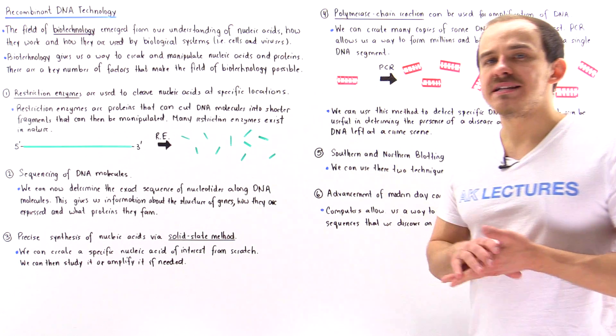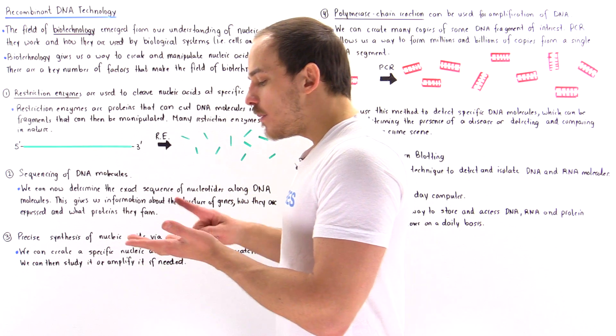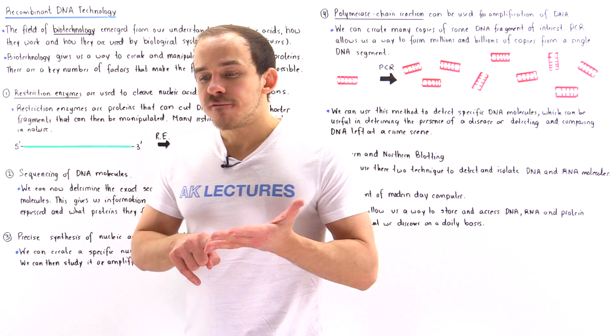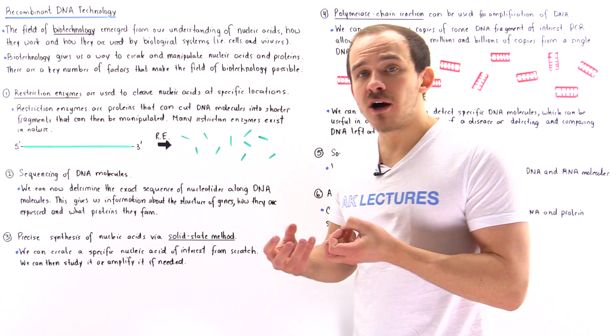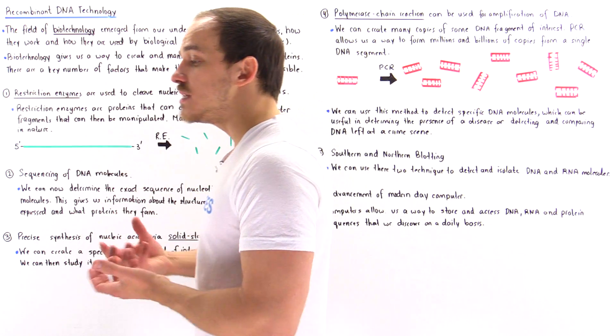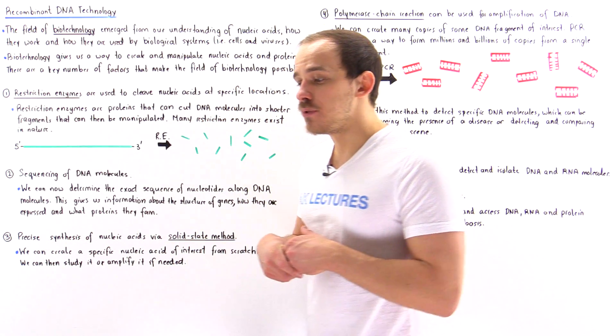Now where did biotechnology actually come from? How did it arise? Well biotechnology came from our understanding of how nucleic acids actually work, how they function, and how the biological systems in nature use these nucleic acids in the first place.